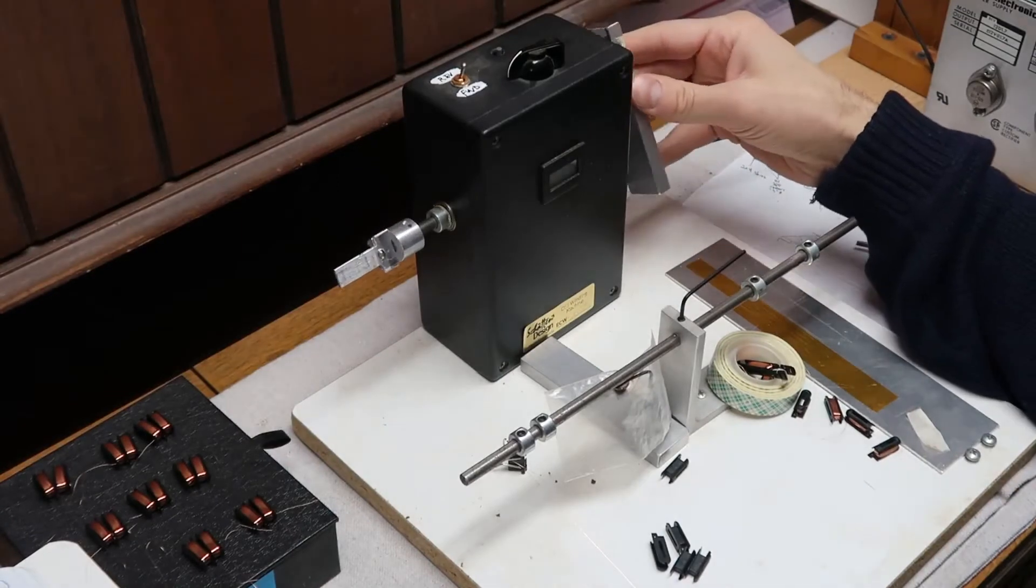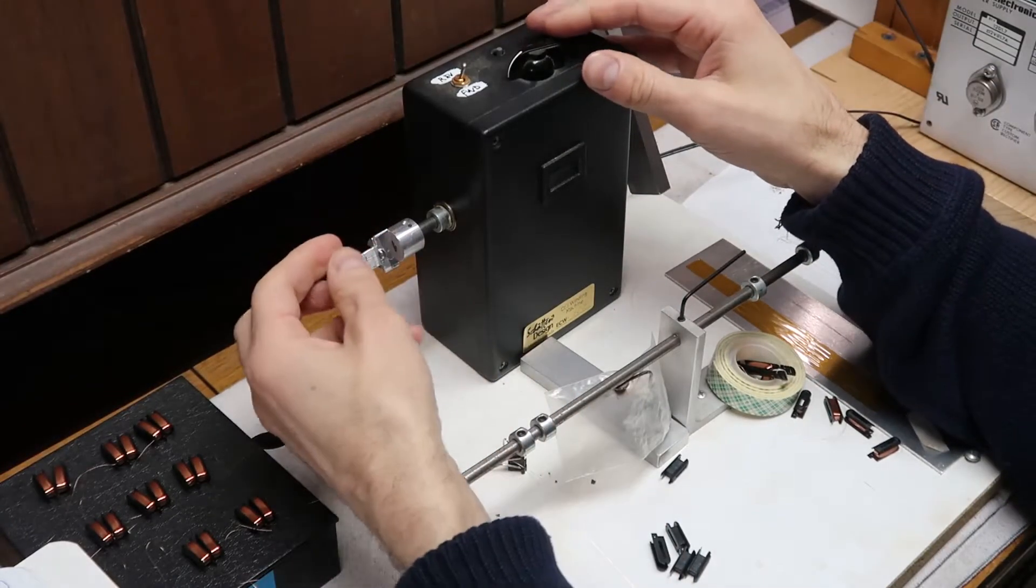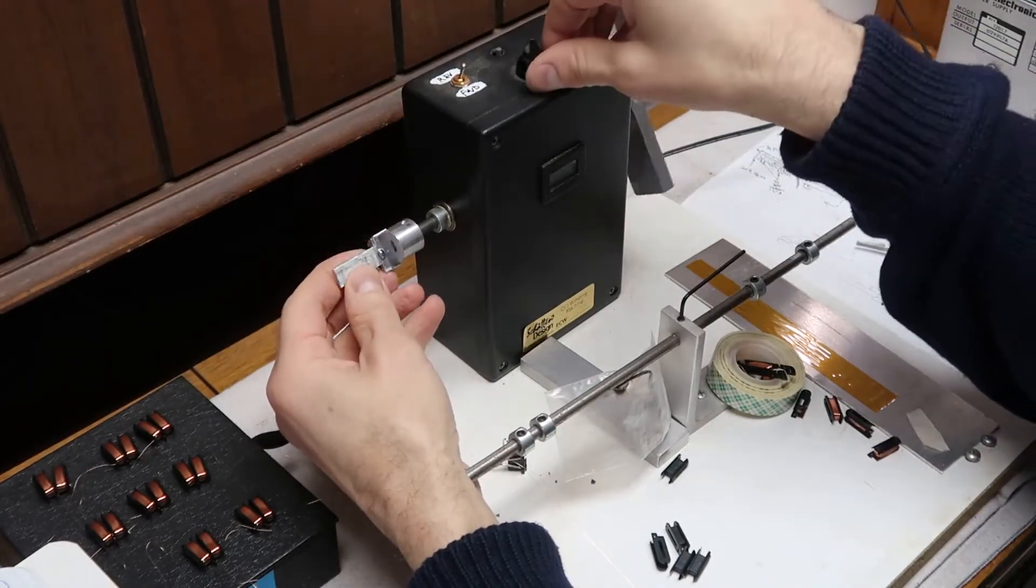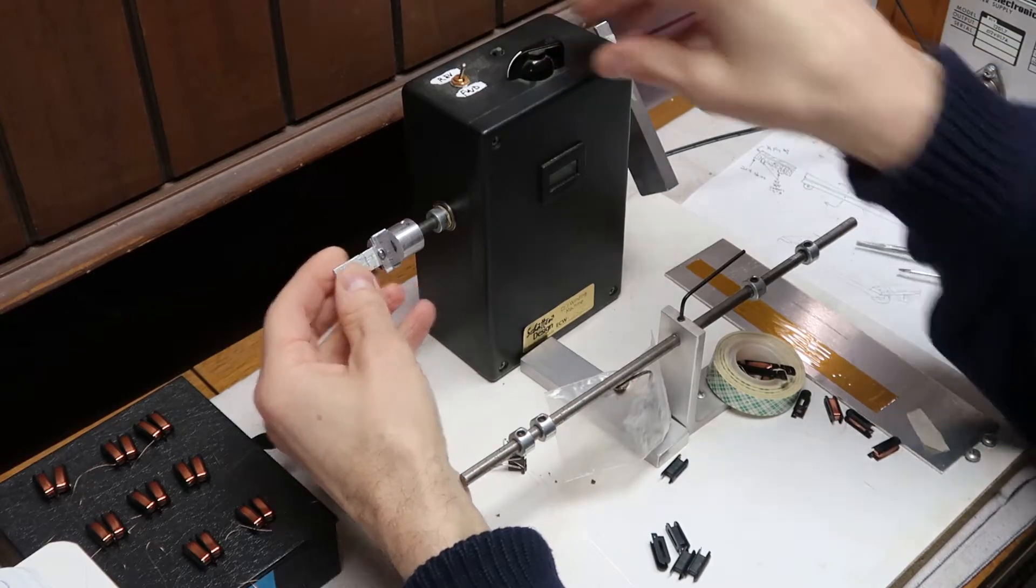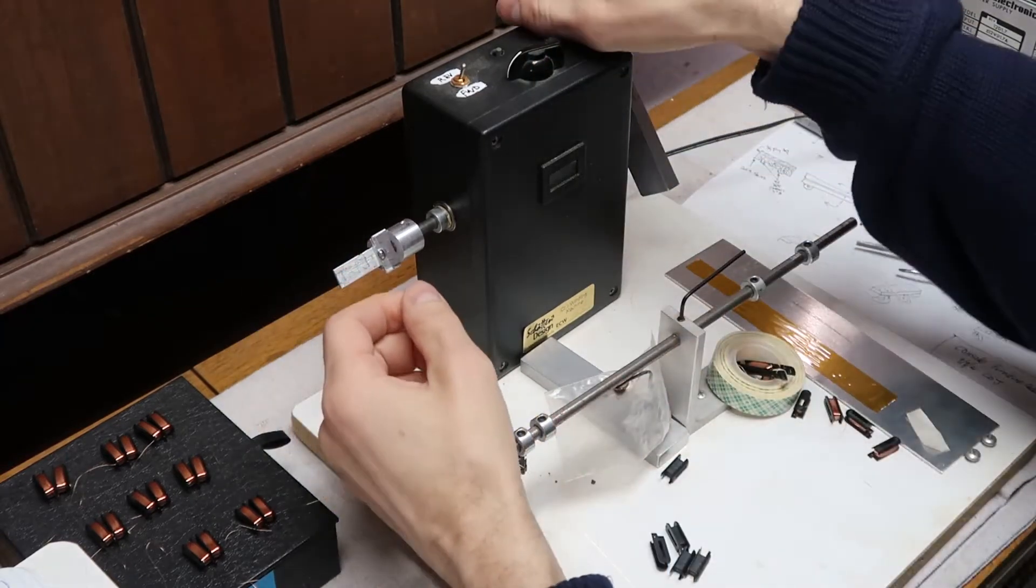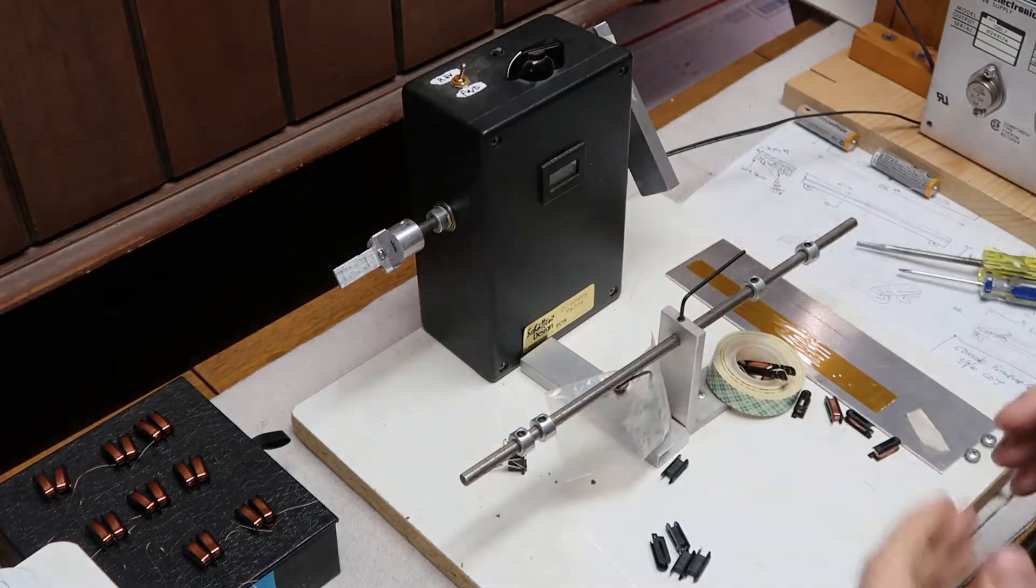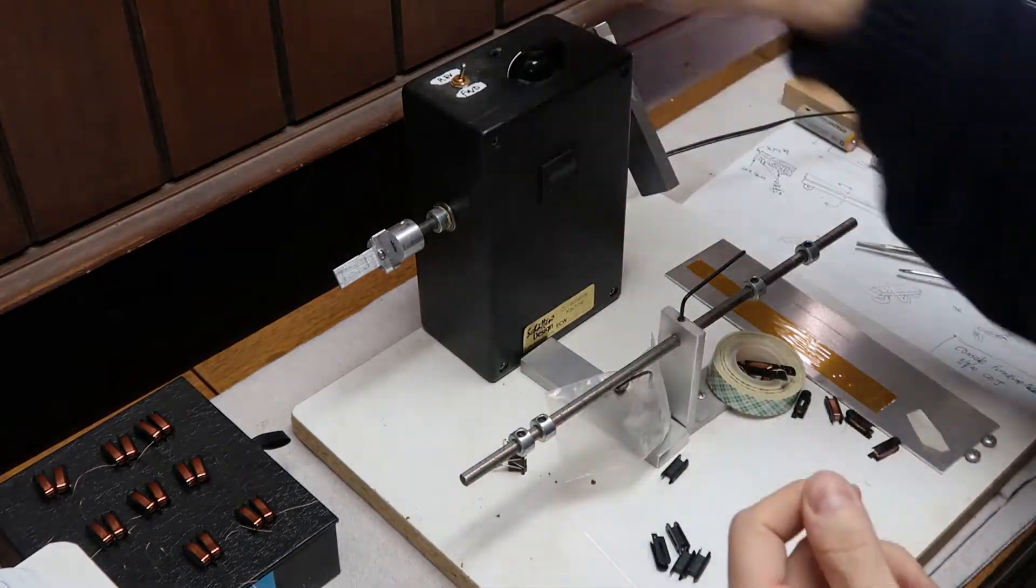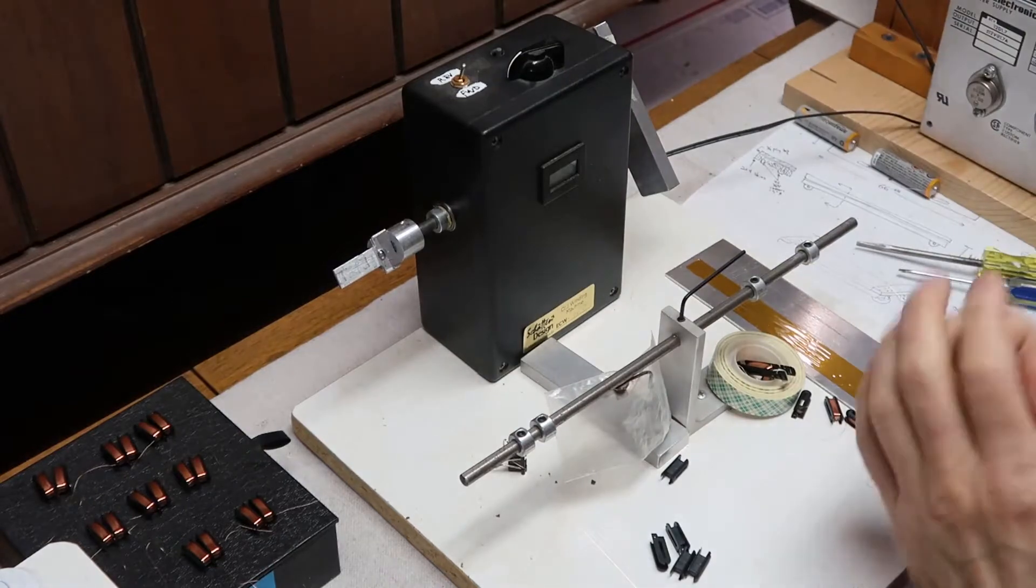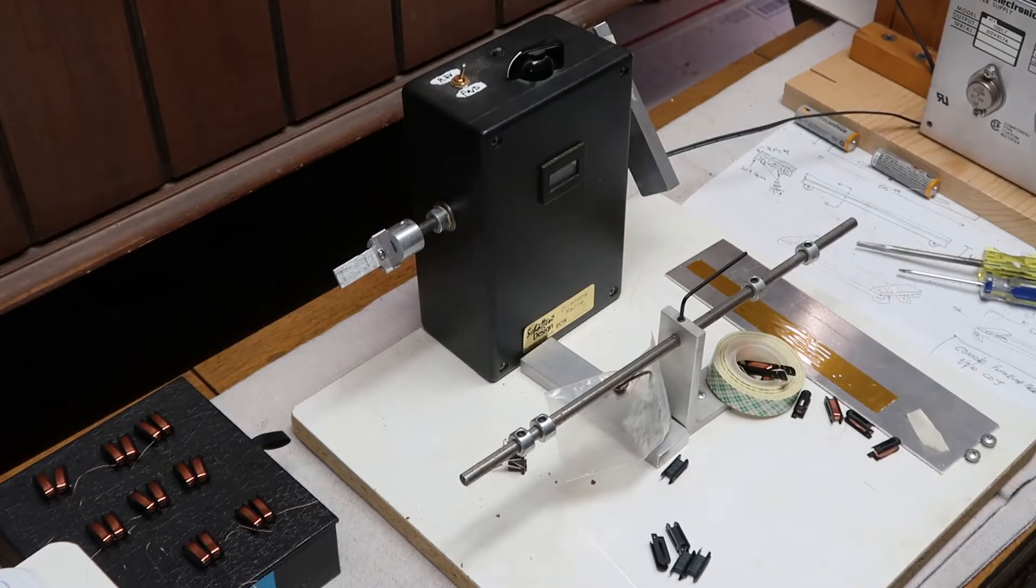I do like my Schatten coil winder here. The only thing is it gets really dicey when you have to reach up here to turn it on and then start winding, and then reach up here again to turn it off, because you're holding with one hand. There's a high risk of breakage, high risk of something going wrong while your hand is reaching up here. So today we're going to put a foot switch on this thing so we can turn it on and off by foot.